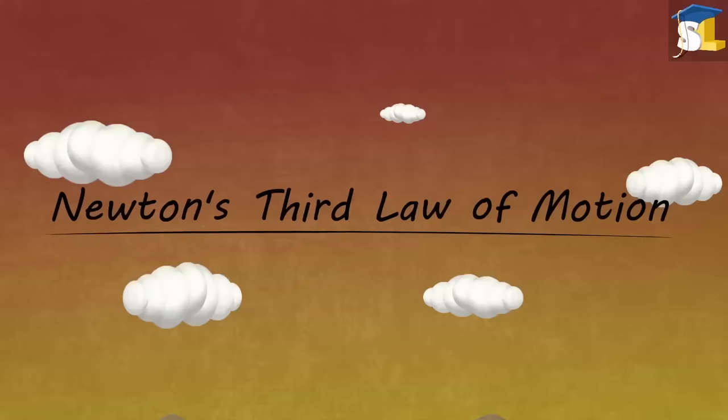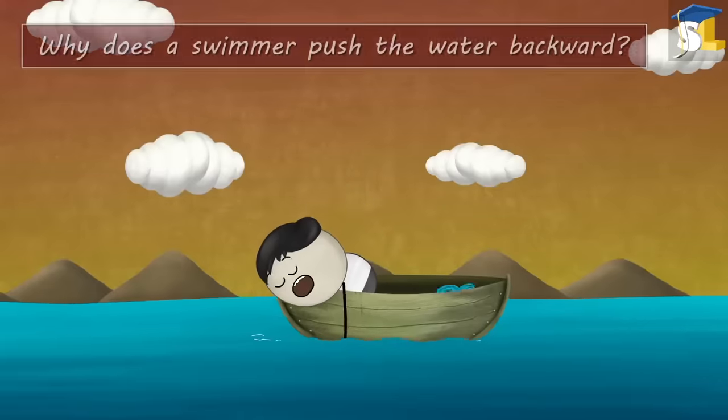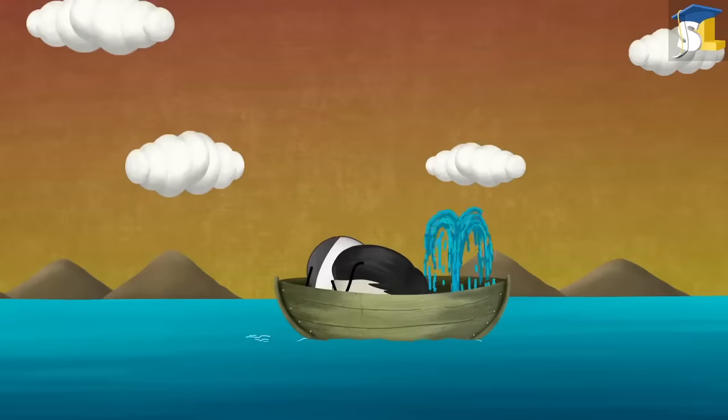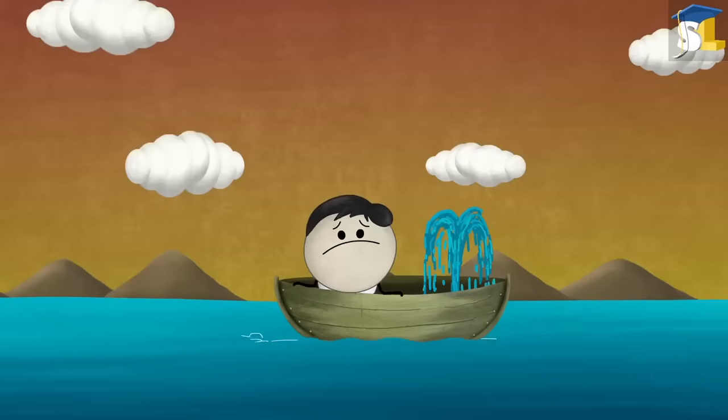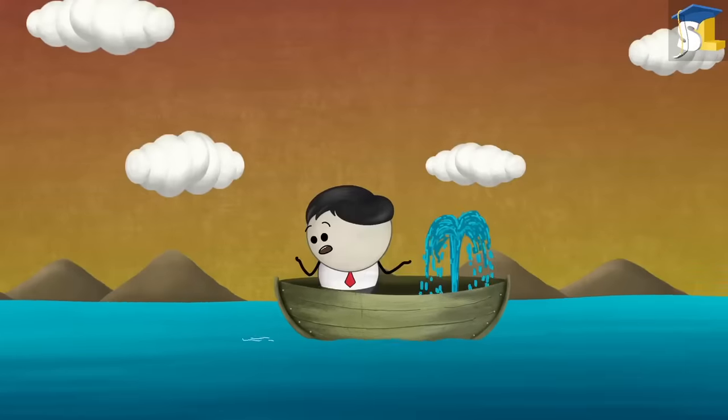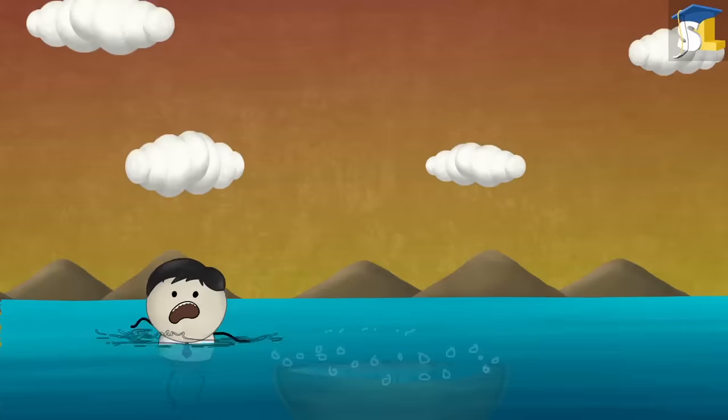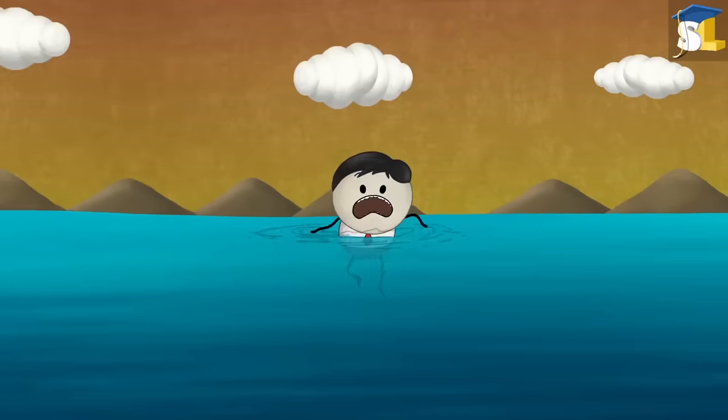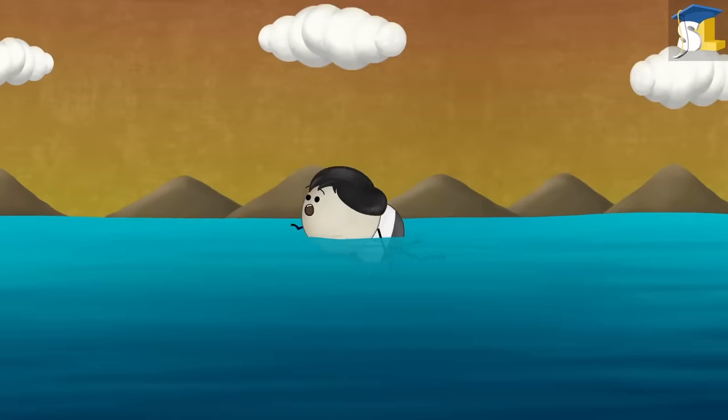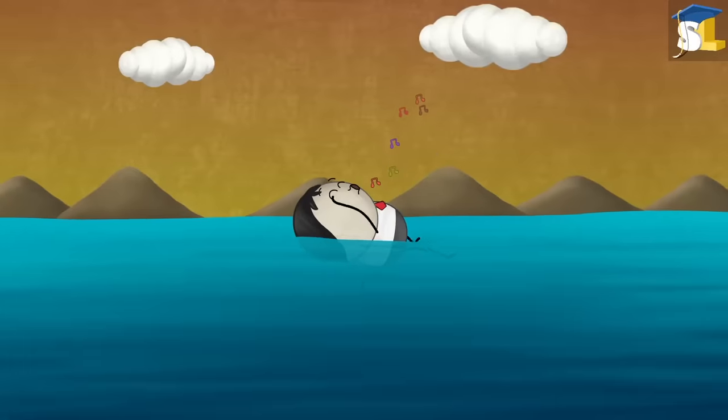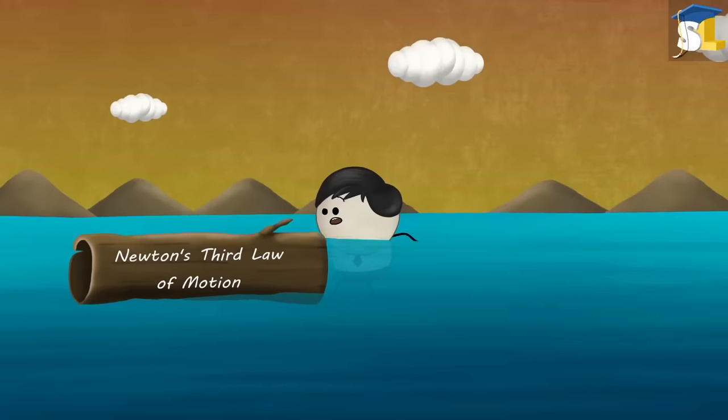Newton's Third Law of Motion. Why does a swimmer push the water backward? Oh no. There is a hole in the boat. Now, how will you reach the shore? Don't worry. Do as I say. Jump in the water and push the water backward with your hands. This will help you to move forward towards the shore. No. You are not pushing the water backward. See. You are moving forward towards the shore. Do you know why you were able to move forward by pushing the water backward? To understand this, you need to learn about Newton's Third Law of Motion.